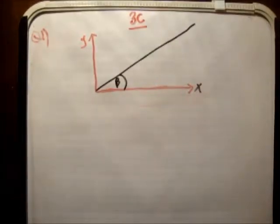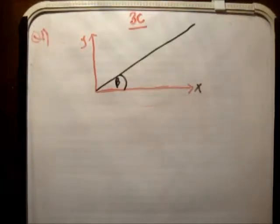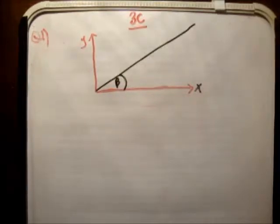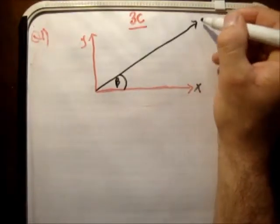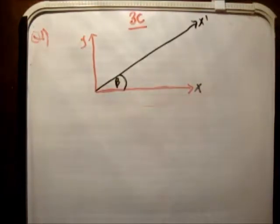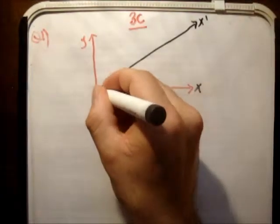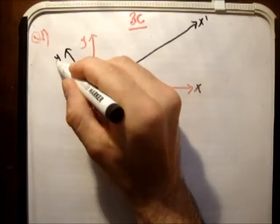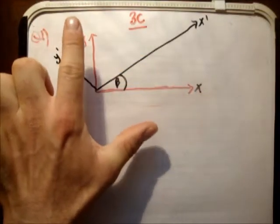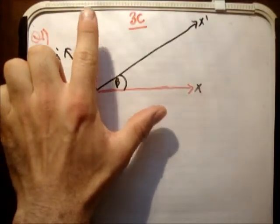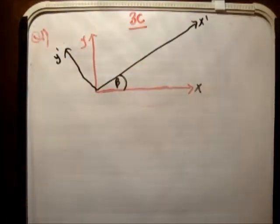Now the next thing we need to do is to make a new xy plane — an x prime, y prime plane. For this, we let the x prime axis be parallel with the incline. That's going to be my new x axis, the x prime axis. And the y prime axis is perpendicular to it. So in this case what we've done is we've picked up the xy plane and rotated it anti-clockwise by beta degrees.